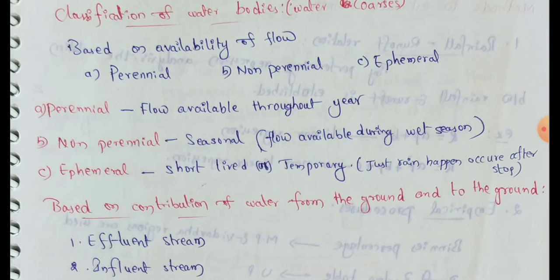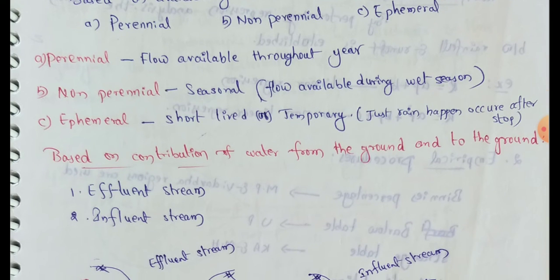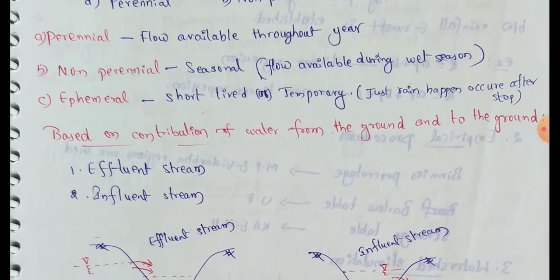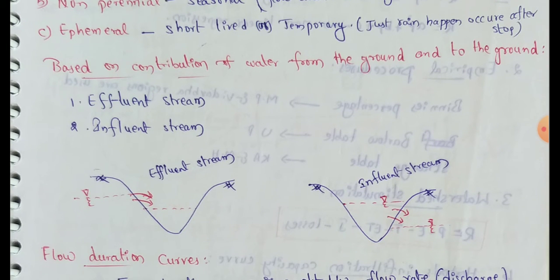So these are the three types of streams: perennial, non-perennial, and ephemeral. Next, based on contribution of water from the ground, we have two types of streams: effluent streams and influent streams.